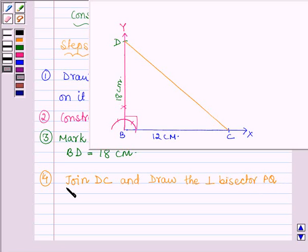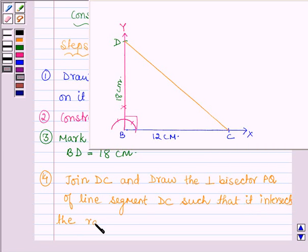Let it be PQ of line segment DC such that it intersects the ray BY at a point A. So suppose this is the perpendicular bisector PQ of line segment DC.